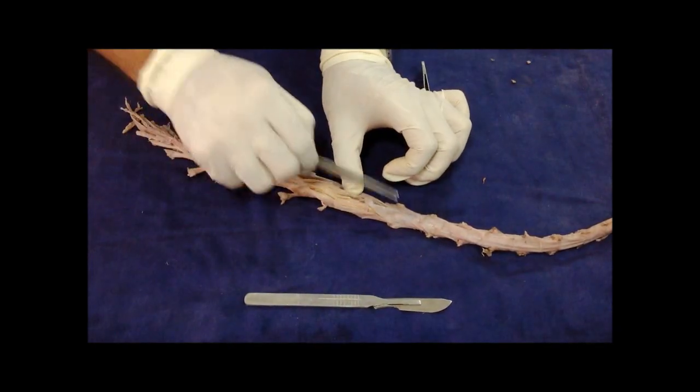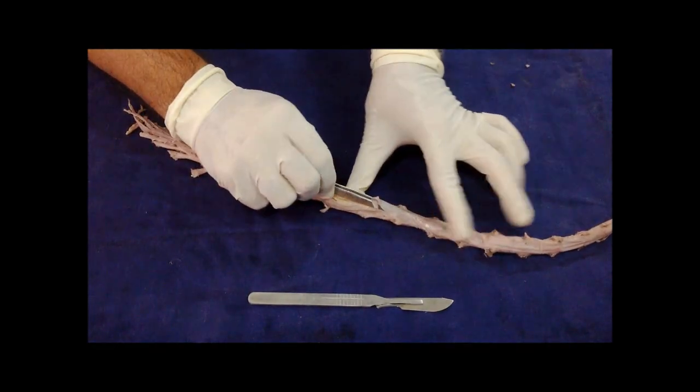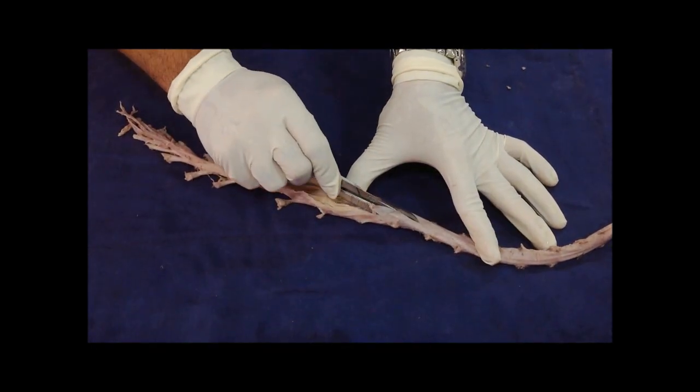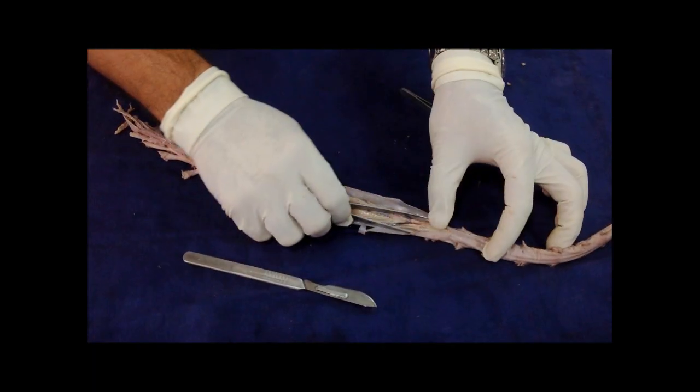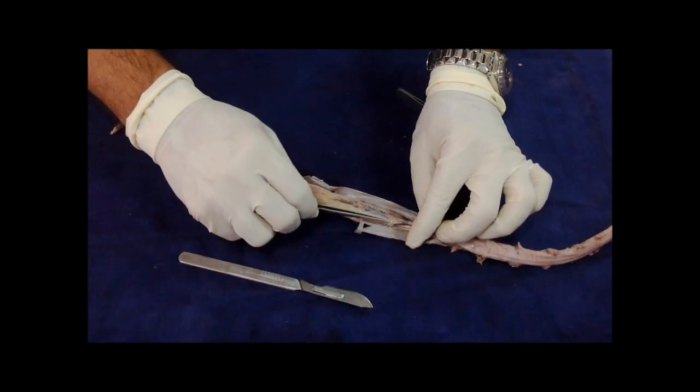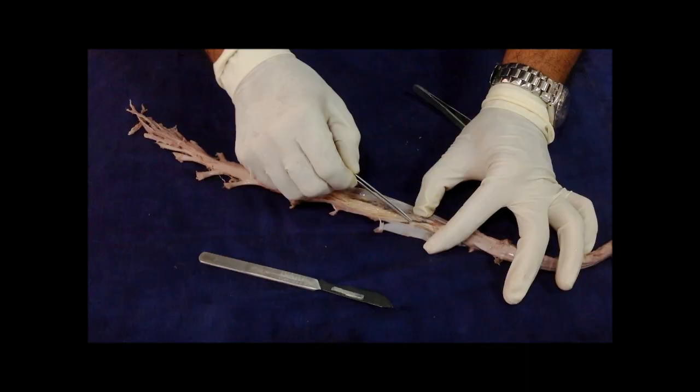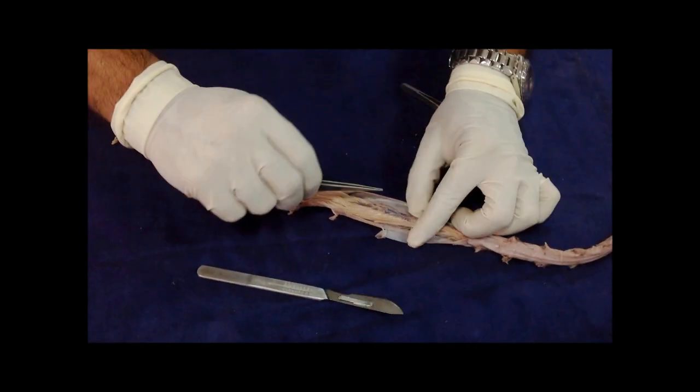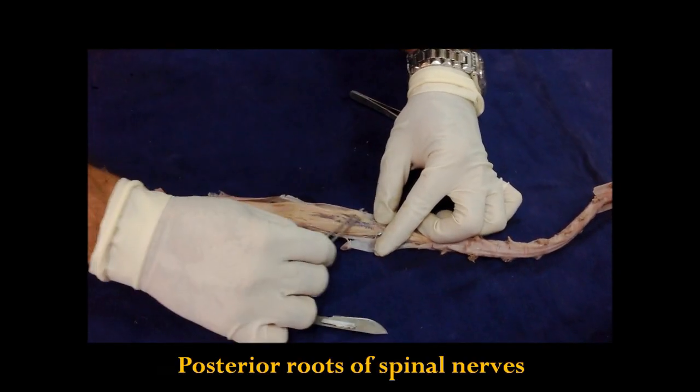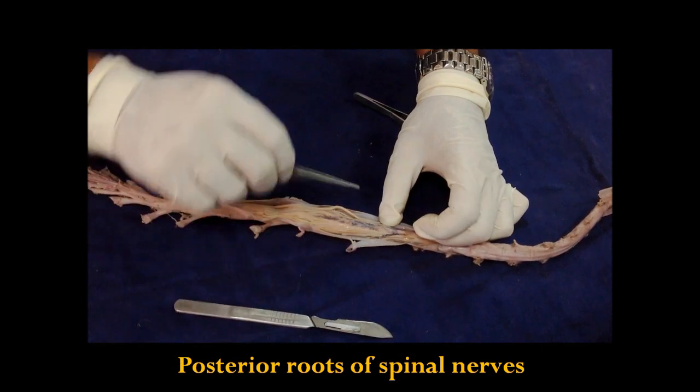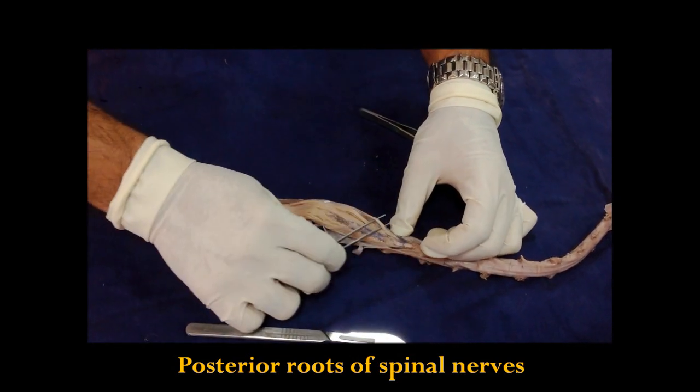Now I am showing you the posterior surface of the spinal cord. I will show you the posterior roots of spinal cord here. These are the posterior roots of spinal nerves. They are sensory in function.